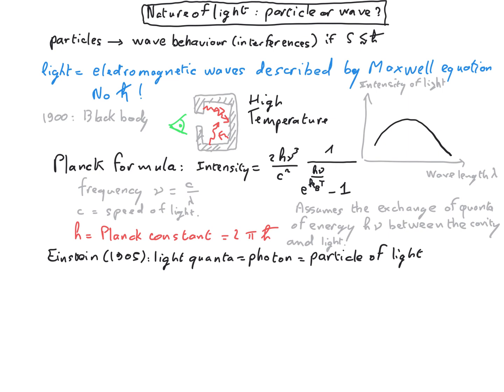And in order to reproduce the Planck formula, Einstein had to define the energy of the photon as E equal h nu.